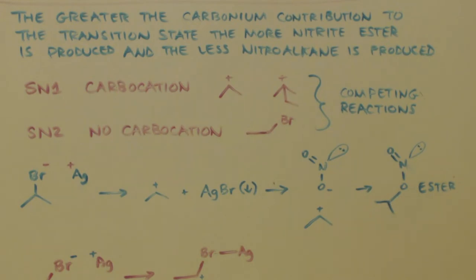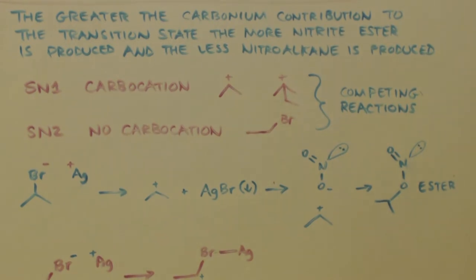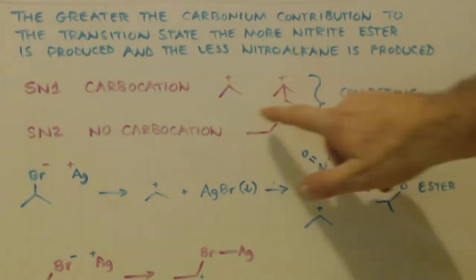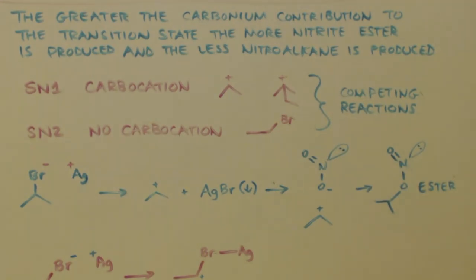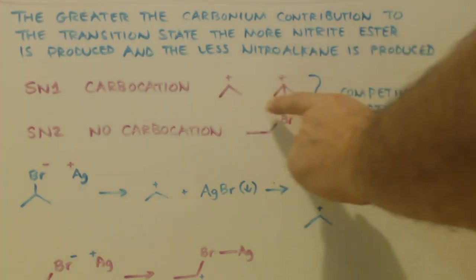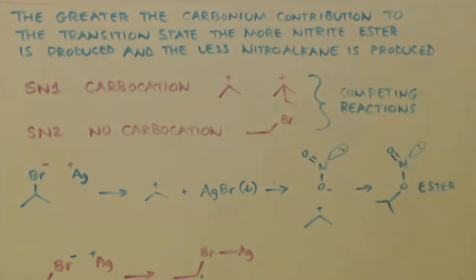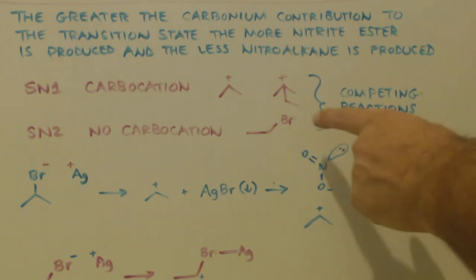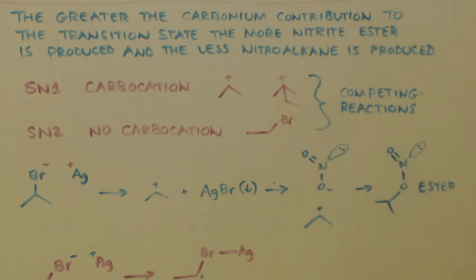But I did find out one thing, because it's so hard to find anything out about this reaction. But the one sentence I did find was, the greater the carbonium contribution to the transition state, the more nitrite ester is produced, and the less nitroalkane is produced. What does that mean to me? Carbonium, that's like a carbocation. I think carbocation, I think SN1 reaction. So SN1 is always going to be a secondary or tertiary. If you have a secondary alkyl bromide, or a tertiary alkyl bromide, you're going to do the SN1, and that means that you're going to have the nitrate ester more.